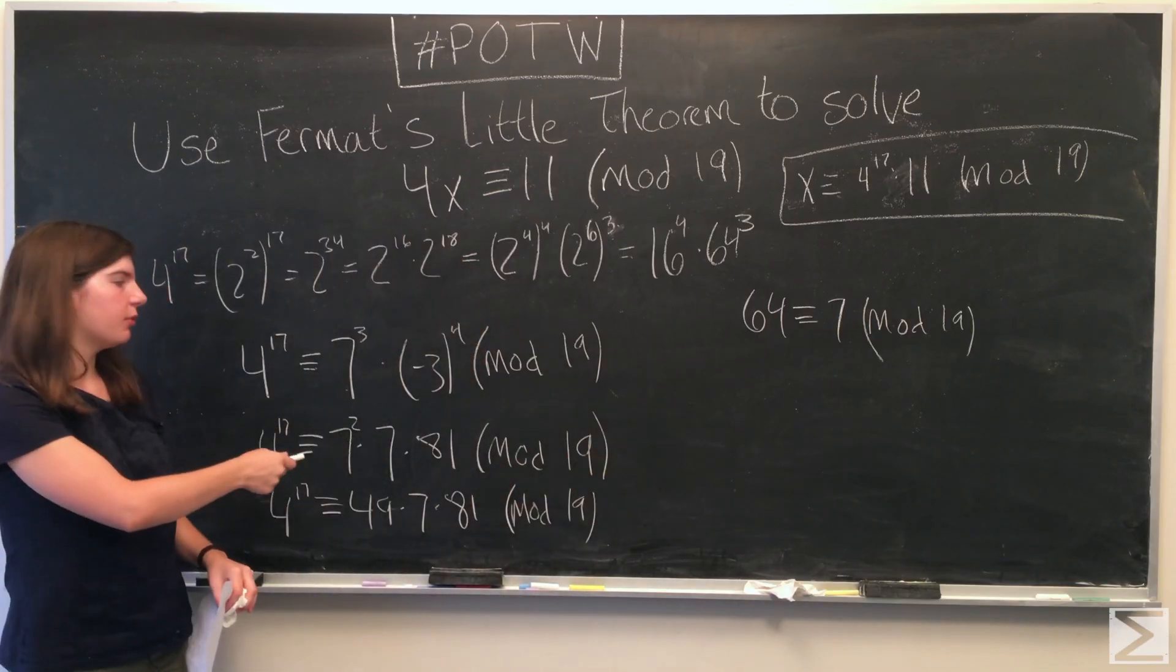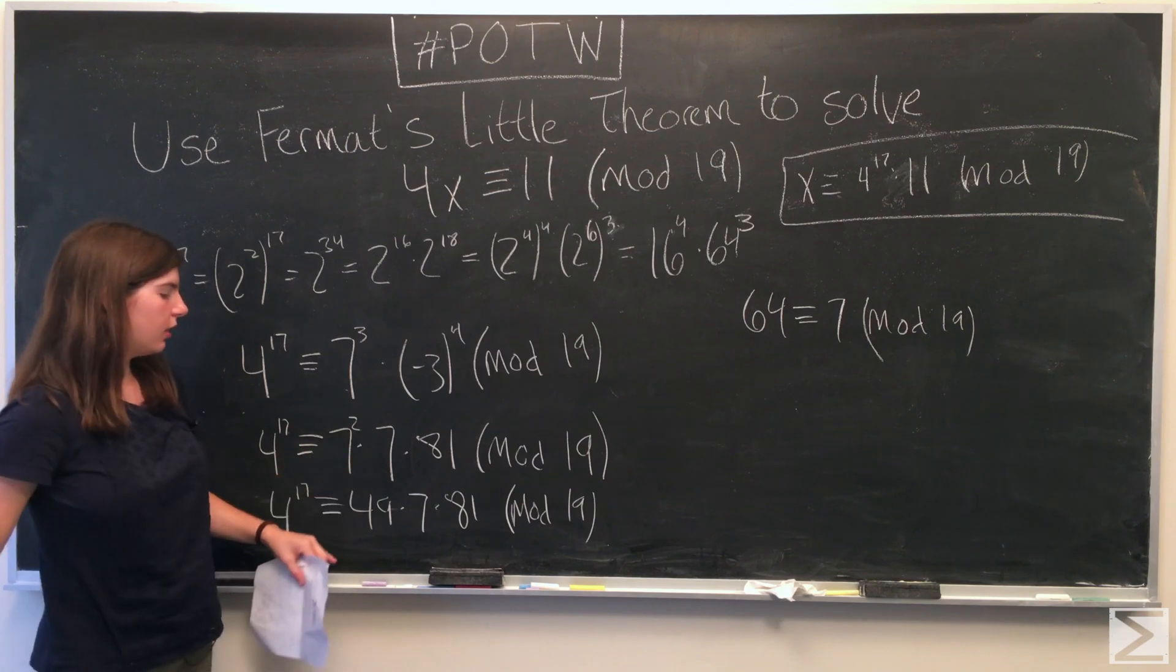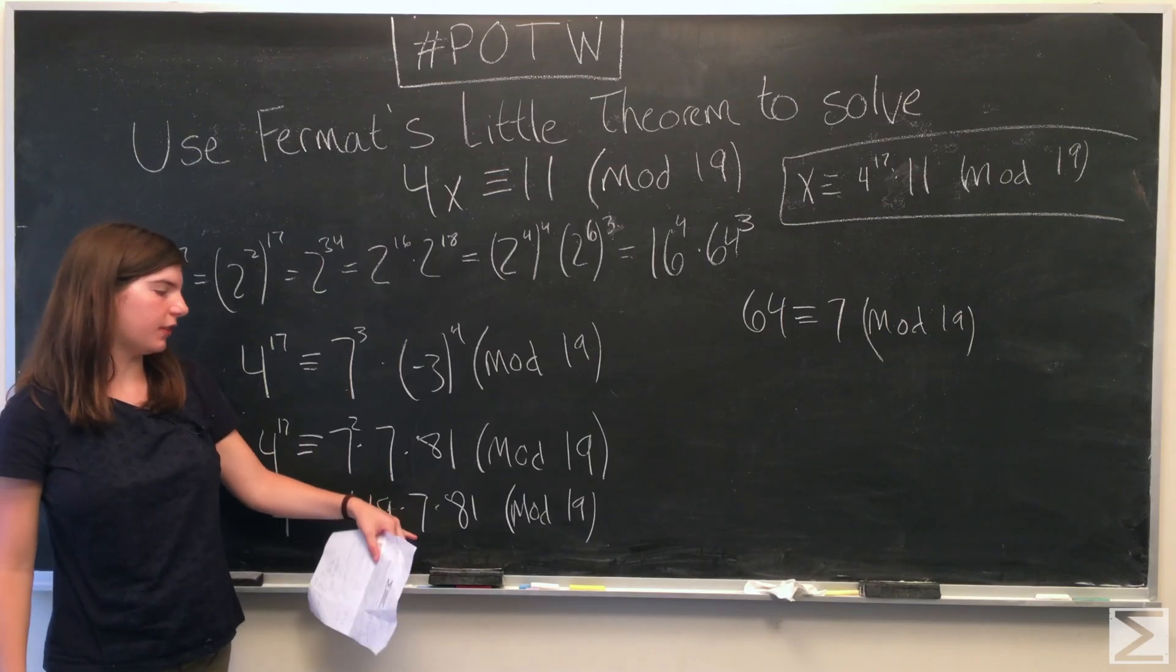All right, for this step, all we did was break up 7 to the 3rd to 7 to the 2nd times 7. So now we have 4 to the 17th is congruent to 49 times 7 times 81.